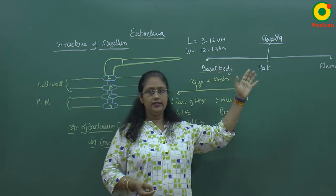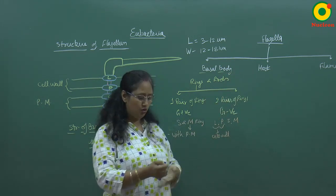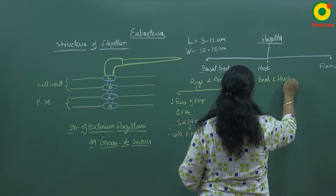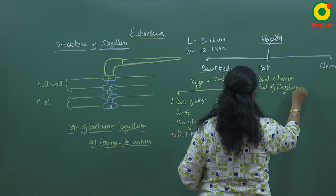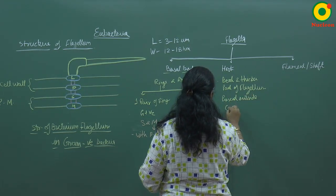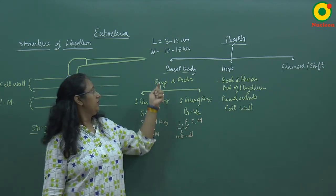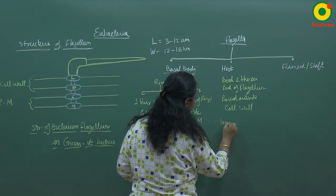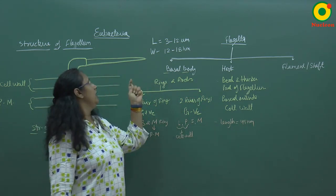Just outside the cell wall there is a bent and thicker structure known as the hook. The hook is the bent and thicker part of the flagellum present outside the cell wall, and its length is approximately 45 nanometers.